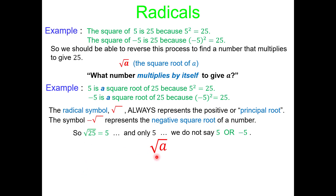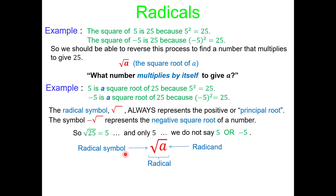Square root of a — the radical symbol is just the outside part. What's inside is called the radicand, and then the whole thing is called a radical. So it's just some vocabulary for you. Inside a radical symbol is called the radicand — you'll hear me say it a few times.